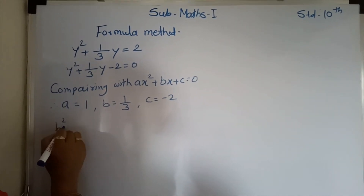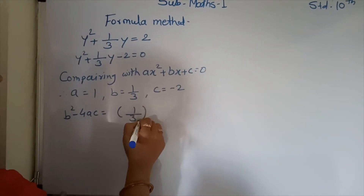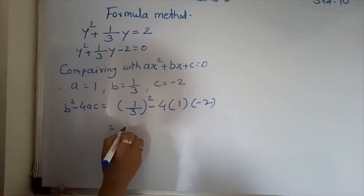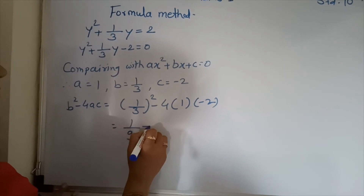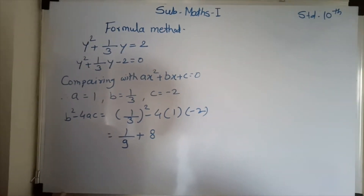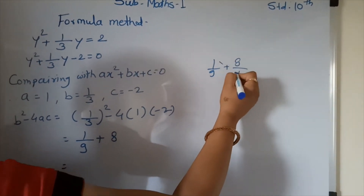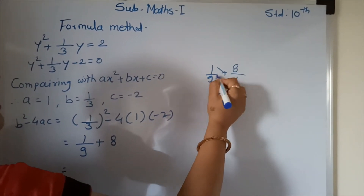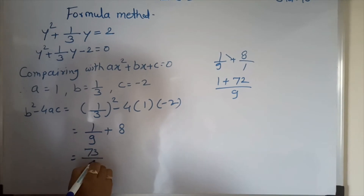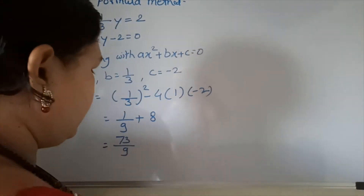Then b square minus 4ac is equal to 1 upon 3 square minus 4 into 1 into minus 2. 1 square is 1, 3 square is 9. Minus times minus plus, so plus 4 times 2 is 8. By cross multiplication: 1 upon 9 plus 8 gives 1 plus 72 upon 9, which is 73 upon 9. The value of b square minus 4ac is equal to 73 upon 9.